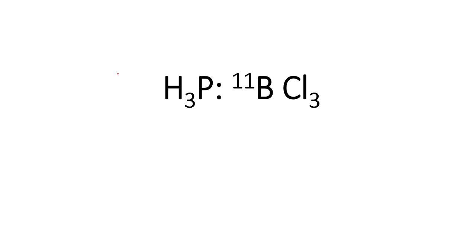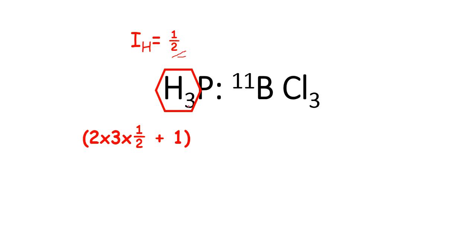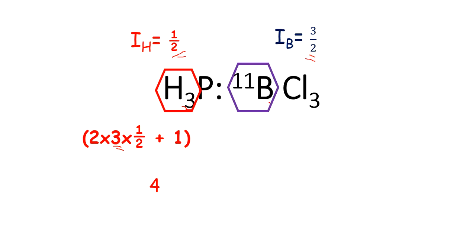So this is our question: we are given PH3 and BCl3. For the hydrogen in PH3, the I value is 1/2. There are 3 hydrogens, so 2 × 3 × 1/2 + 1 gives 4 peaks. Similarly, for B11, the I value is 3/2 and there is only 1 boron, so 2 × 1 × 3/2 + 1 also gives 4 peaks.